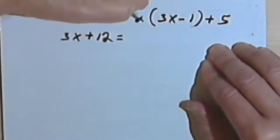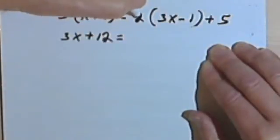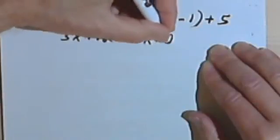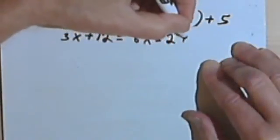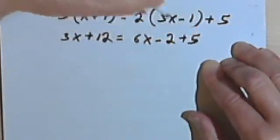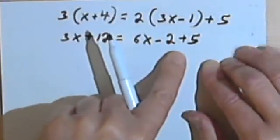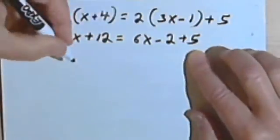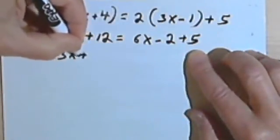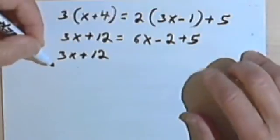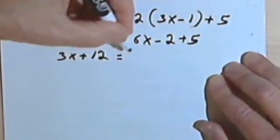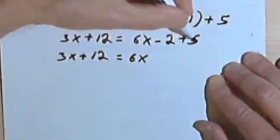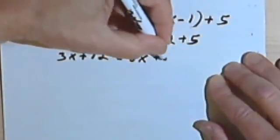On the right side I'll also distribute. I'll multiply 2 times 3x will give me 6x. And then 2 times negative 1 will give me negative 2. And I've got this plus 5. So let's simplify the right side by combining the negative 2 and the plus 5. I'll rewrite everything else exactly as it is. So I've got 3x plus 12 equals 6x. And then I've got negative 2 plus 5 will give me a positive 3.